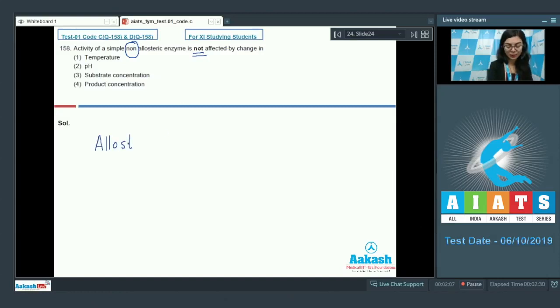As we know, allosteric enzymes show feedback mechanism. And by feedback mechanism, we mean that one of the products which is formed during the chain of the metabolic reaction either acts as a modulator or as an inhibitor. So the product plays an important role here, but not all products. Only one of the products which are formed in the reaction. But here the enzyme is non-allosteric, so product concentration would not play any role.